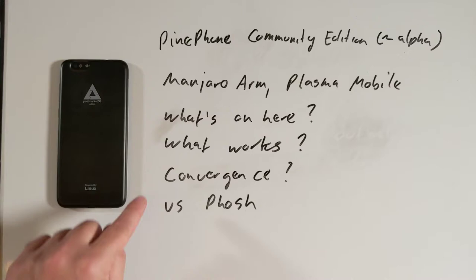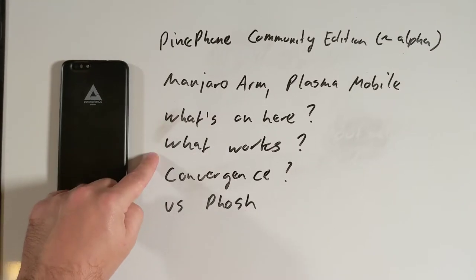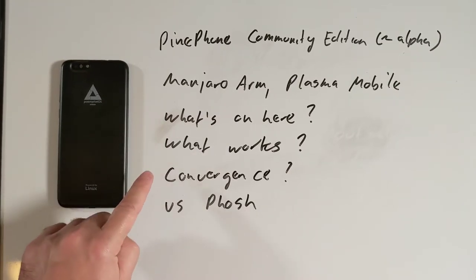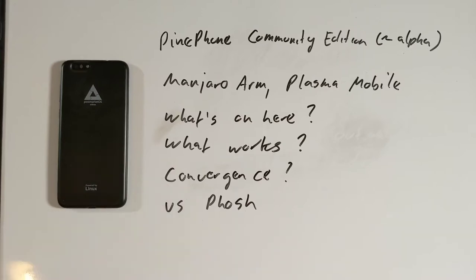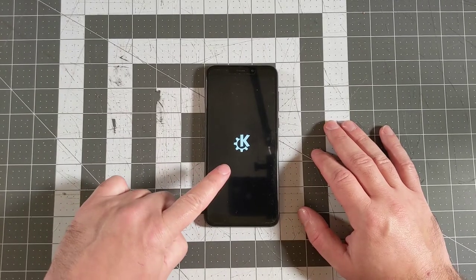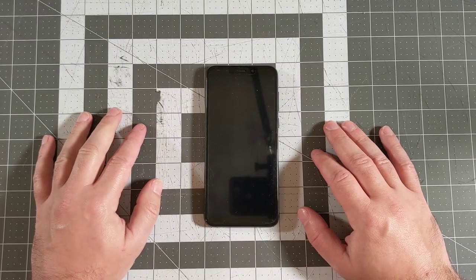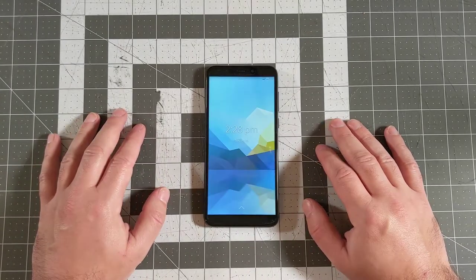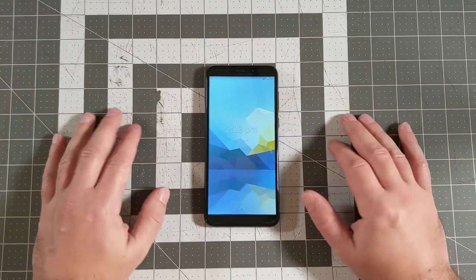Today we're going to look at what's on here by default and what works. We're going to try out Convergence, and hopefully that's going to be interesting. You can see that we have the KDE logo here as we boot up the phone. So there is our initial screen.